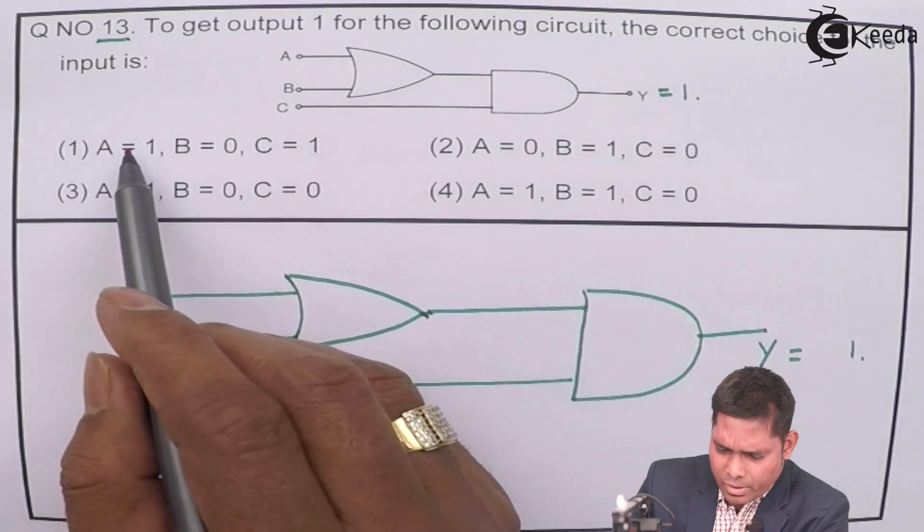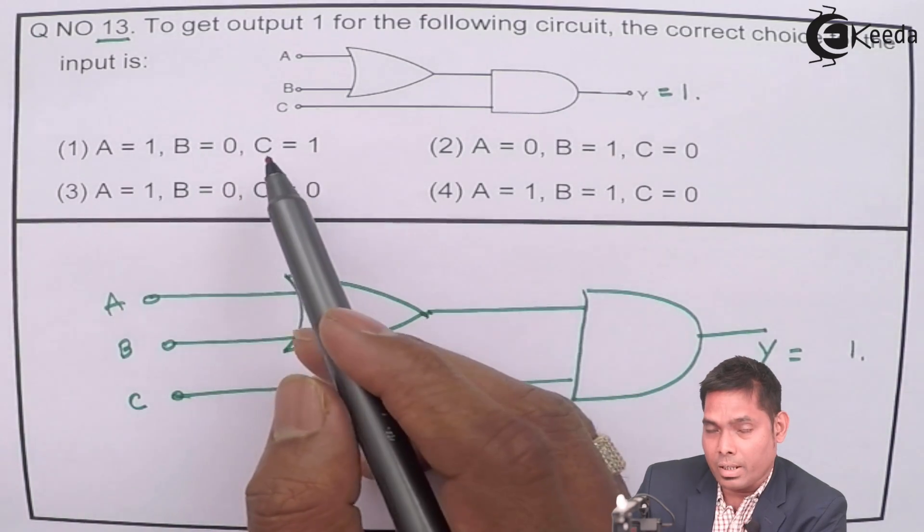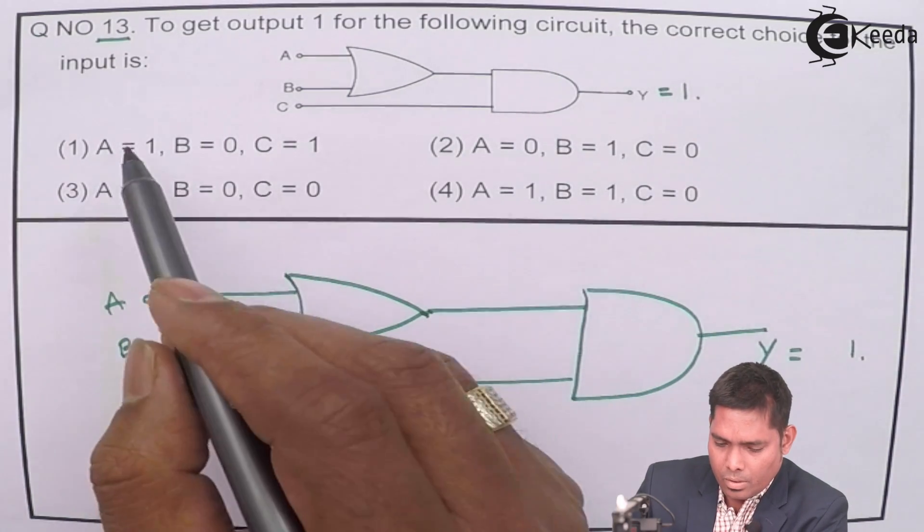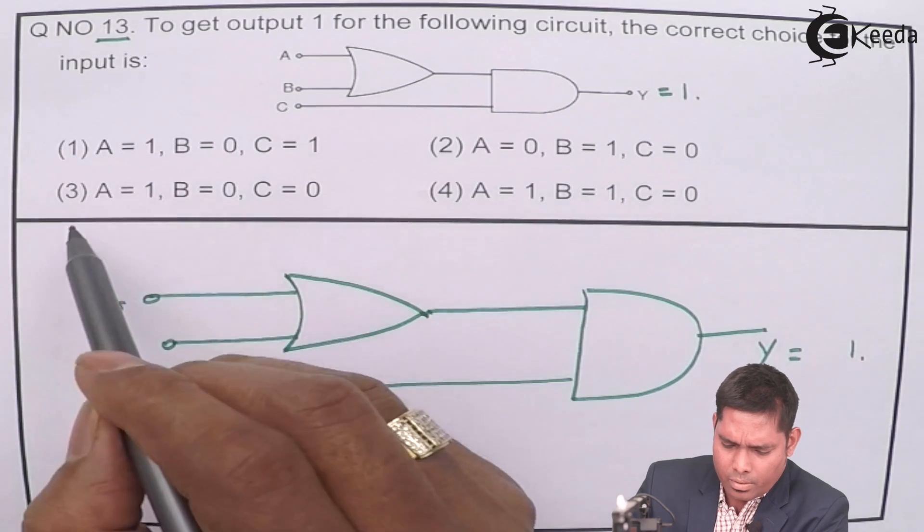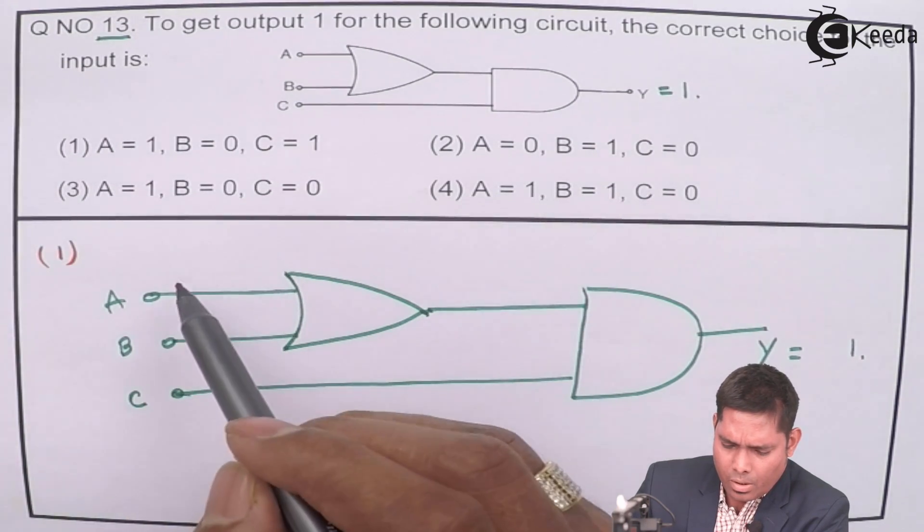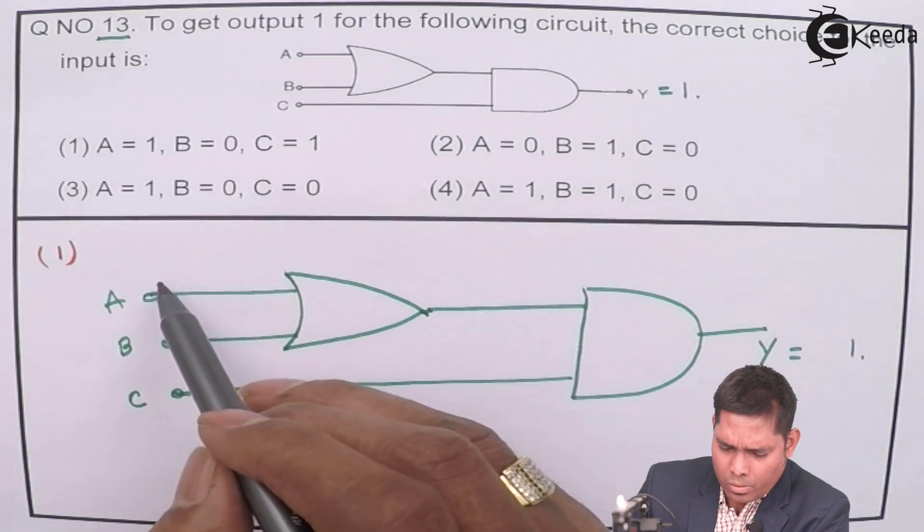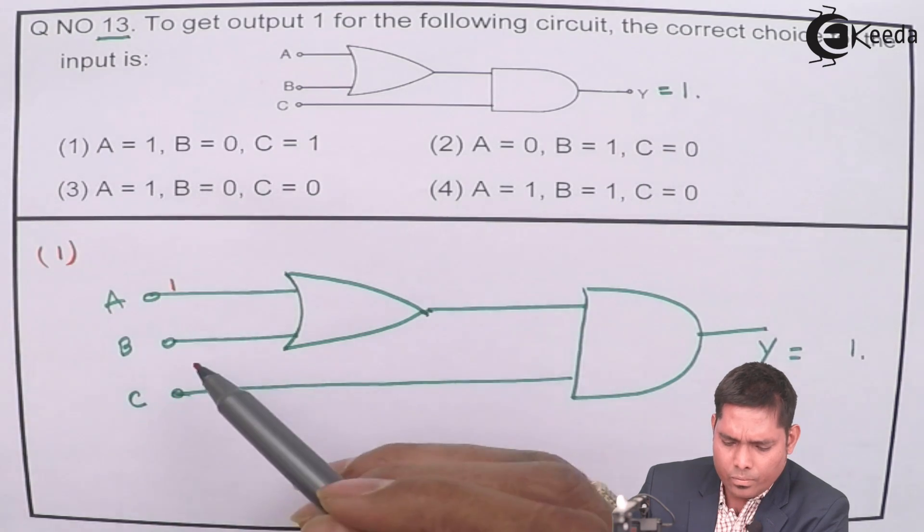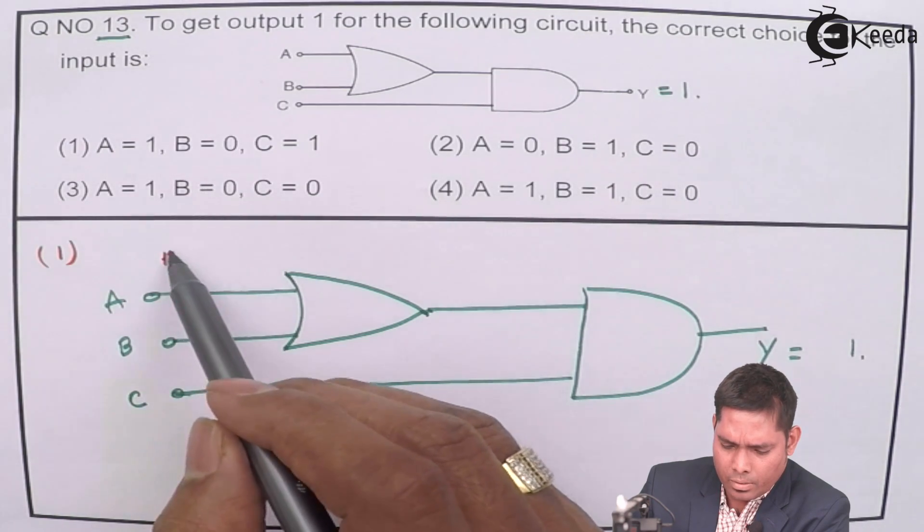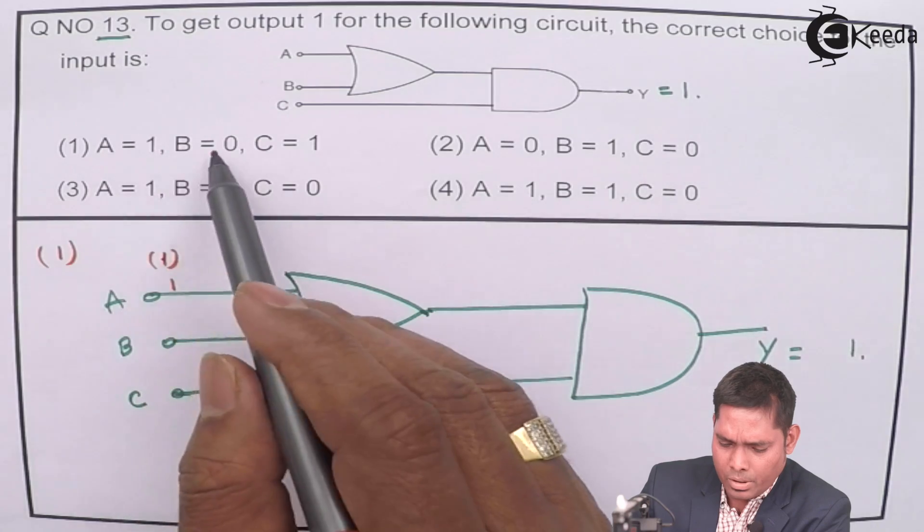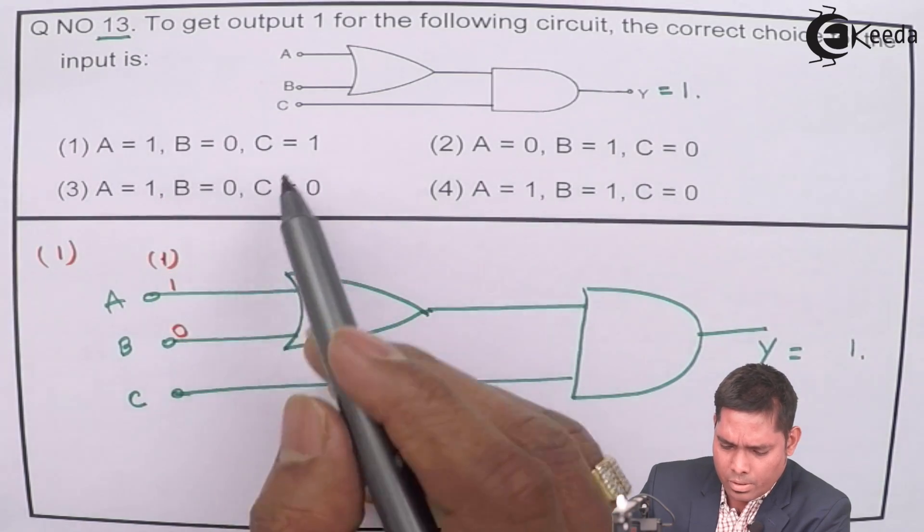First, let us try all the options—whichever we get, that is the answer. If I take option 1, I will put A equals 1 here. This is option number 1: A is 1, B is 0, and C is 1 here.